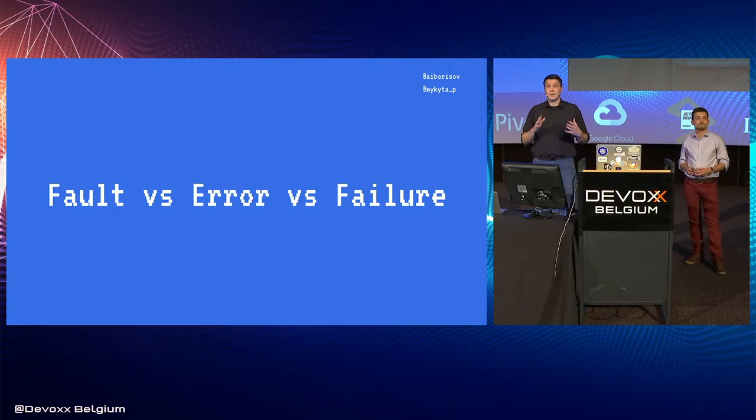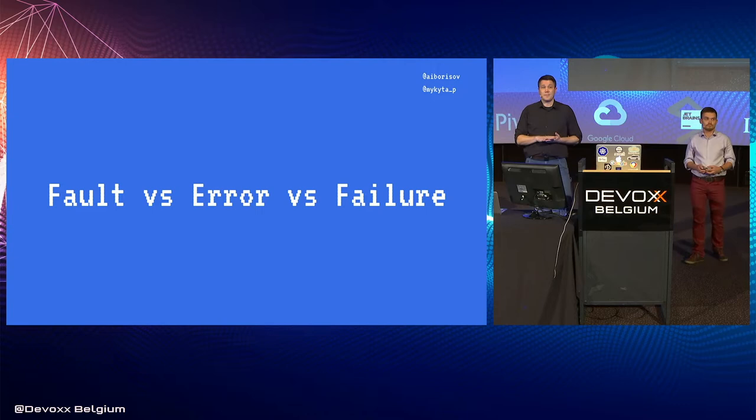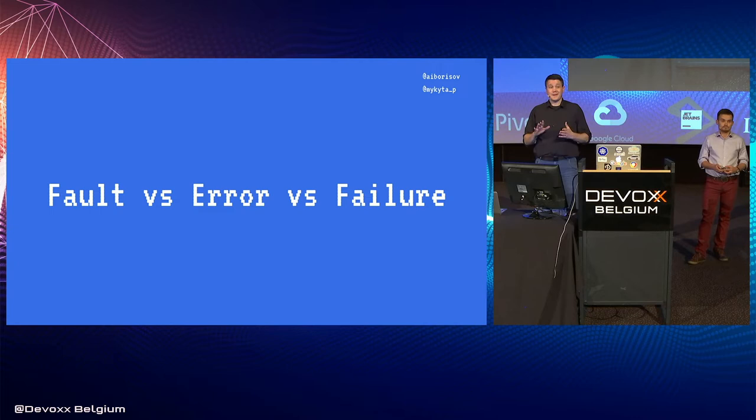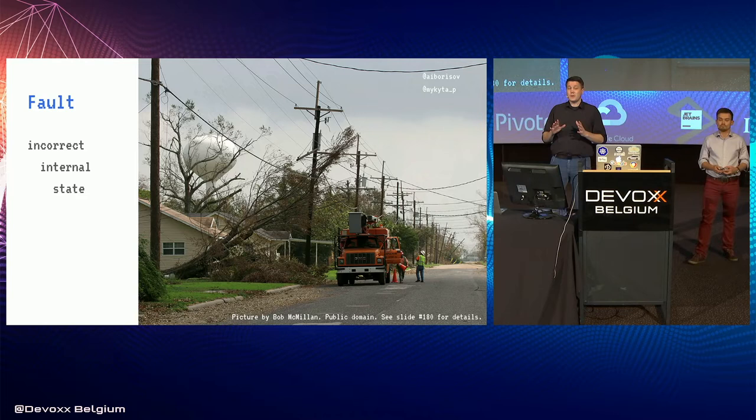Modern software systems are built using different components, parts, and layers. Today we have multiple microservices that talk to each other, and some components will fail or produce a fault. I promise that some of your system's components will produce a fault, and some may be failing right now. The more components you have, the more faults you get.